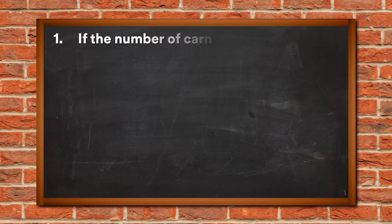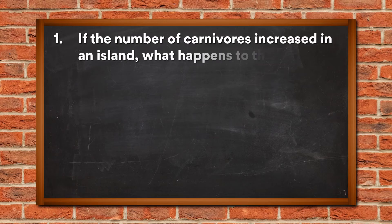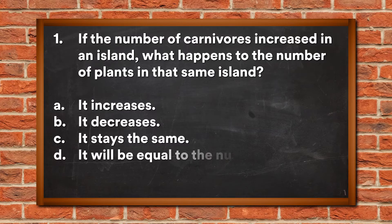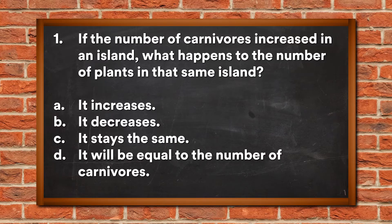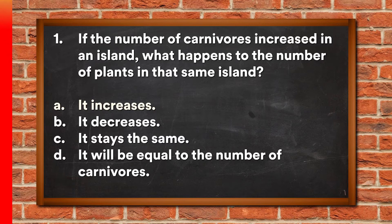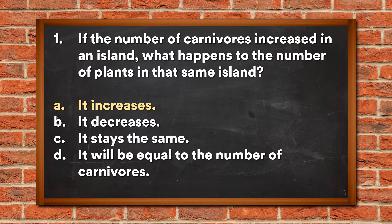Question 1: If the number of carnivores increased in an island, what happens to the number of plants in that same island? A. It increases, B. It decreases, C. It stays the same, D. It will be equal to the number of carnivores. The answer is A, It increases.